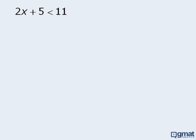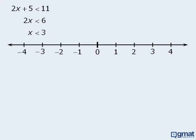Let's try an example. Solving this inequality means finding all values for x that make the inequality a true statement. To do this, we need to isolate the variable x. We'll first subtract 5 from both sides to get 2x is less than 6, and then divide both sides by 2 to get x is less than 3. This means the solution consists of any value of x that is less than 3 — there are infinitely many solutions. To show this on a number line, we draw a circle around 3 to denote that 3 is not one of the solutions, then draw an arrow extending to the left. Any number on the blue line is a solution to the inequality 2x plus 5 is less than 11.